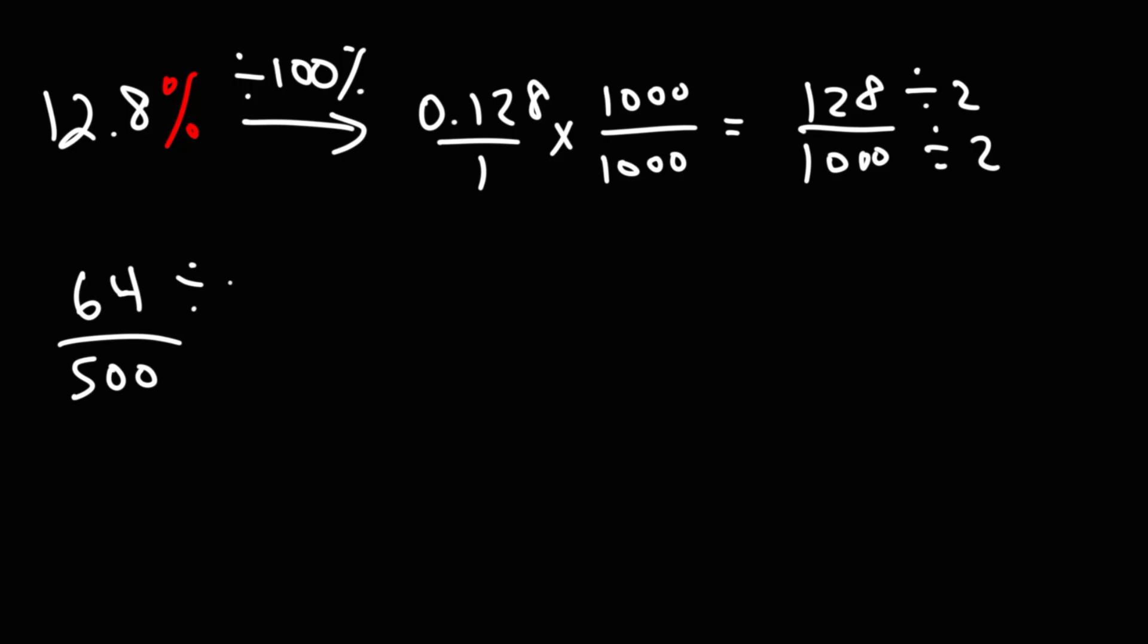Now we still have even numbers. So we could divide by 2 again. 6 divided by 2 is 3, 4 divided by 2 is 2. So half of 64 is 32. Now, half of 500. 50 divided by 2 is 25. Add the 0, you get 250.